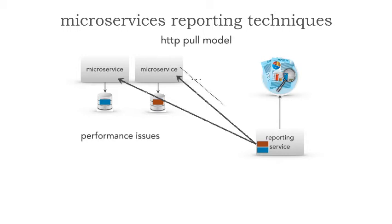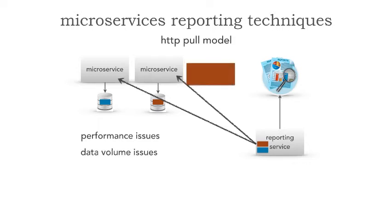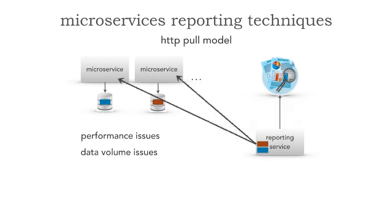However, the first thing we have are performance issues. As a matter of fact, this is just simply going to time out, especially aggregating across multiple microservices. The second issue we have is data volume. Get a list of all trades placed this year — through REST — there's too much data volume. And so this model starts to fall apart.